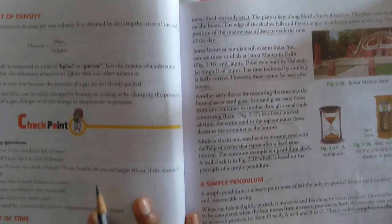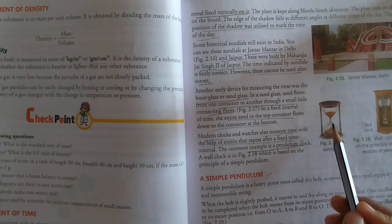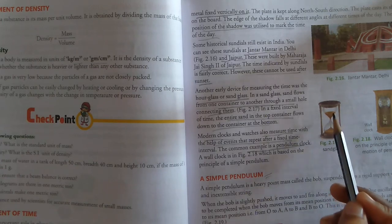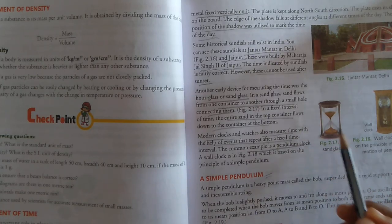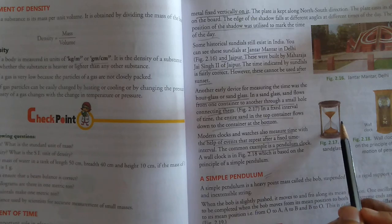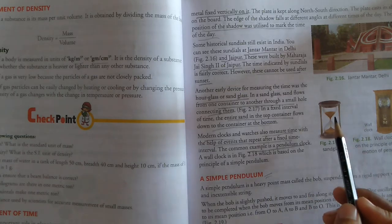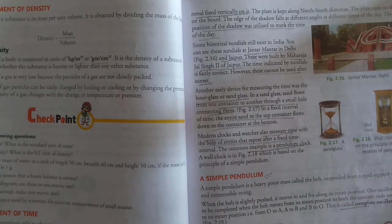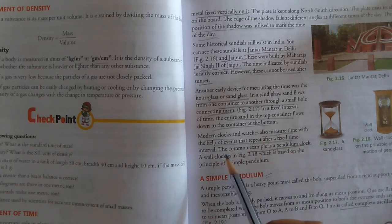Another device for measuring time was the hour glass or sand glass. In a sand glass, sand flows from one container to another through a small hole connecting them. You can see in the diagram. There are two containers. From one, sand slowly comes down by a connecting hole. In a fixed interval of time, entire sand in the top container flows down to the container at the bottom.